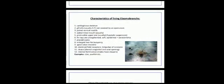Characteristics of Living Elasmobranchs. Cartilaginous skeleton. Gill slits. Paired ventral nostrils. Subterminal mouth. Fin rays are unsegmented. Placoid scales. Enlarged liver for buoyancy.